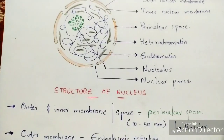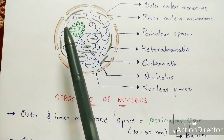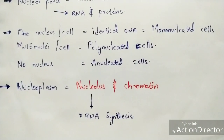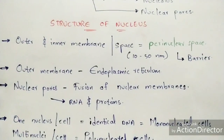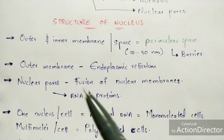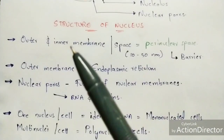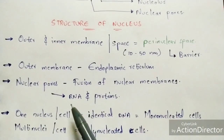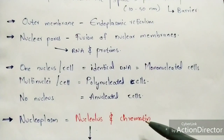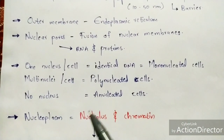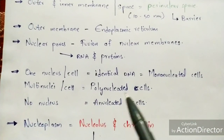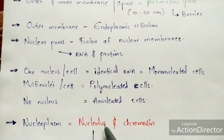The nucleolus plays a major role in that it mainly helps in the synthesis of rRNA — that is, ribosomal RNA. The rRNA produced gets transported into the endoplasmic reticulum via nuclear pores. An important thing to remember: we should write 'nucleoli,' not 'nucleolus,' because many nucleoli are present. Nucleolus is singular; nucleoli is plural.